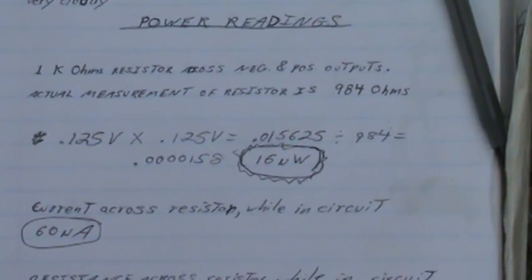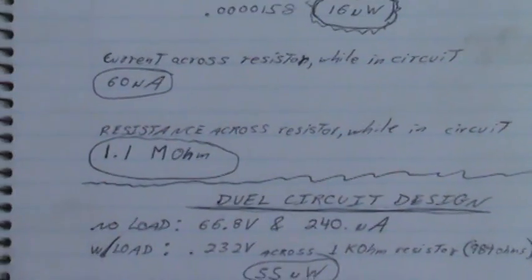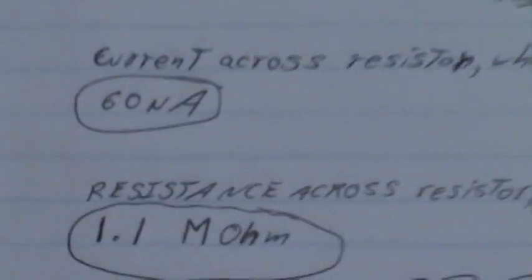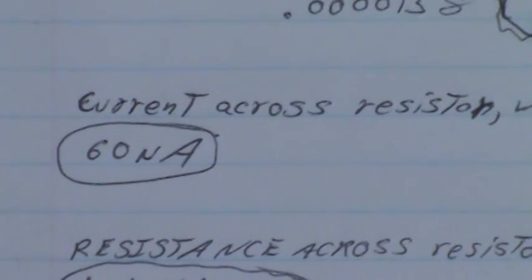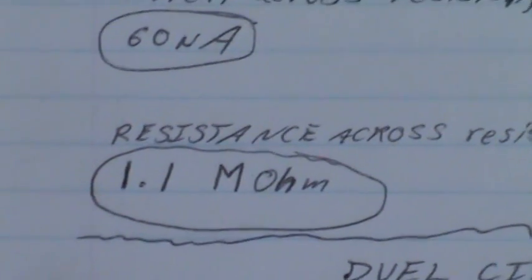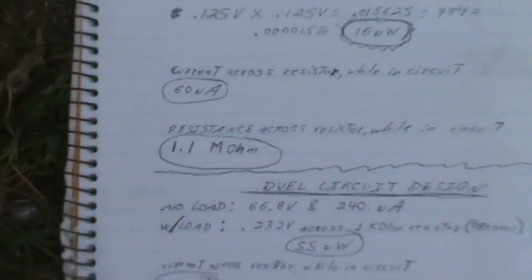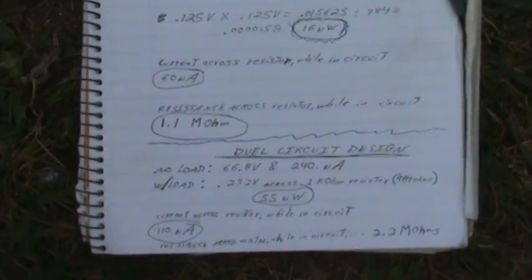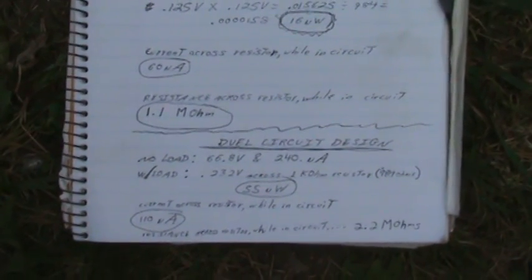Let's see, with one circuit — there it is. The current across the resistor while in the circuit: 60 microamps. And the resistance across the resistor while in the circuit is 1.1 mega ohms. So the power comes out completely different if you use those figures.